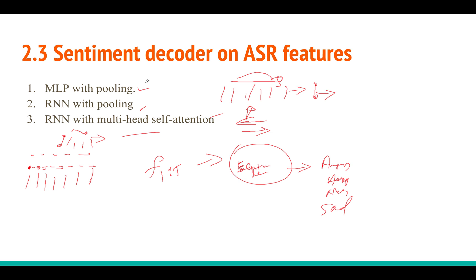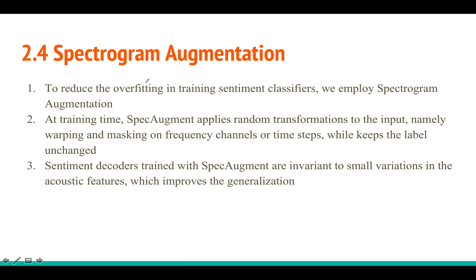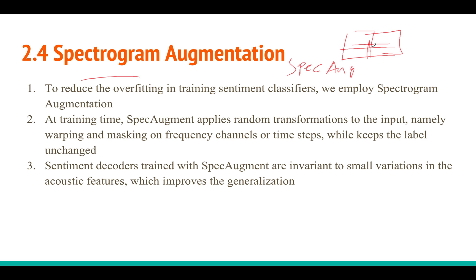This self-attention model is used for the final experiment. They also use SpecAugment — a technique from Google — which augments data by masking portions of the spectrogram along both the time and frequency axes. This improves robustness and reduces overfitting, which is important because IEMOCAP is a small dataset with around 5,000 samples.